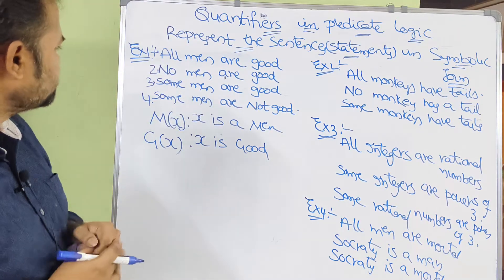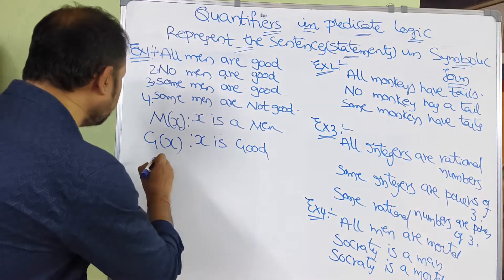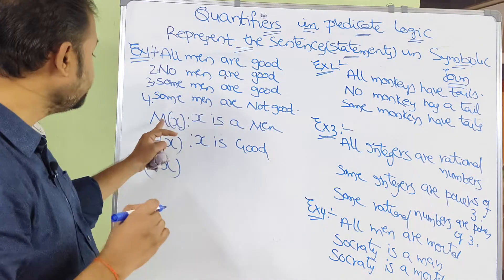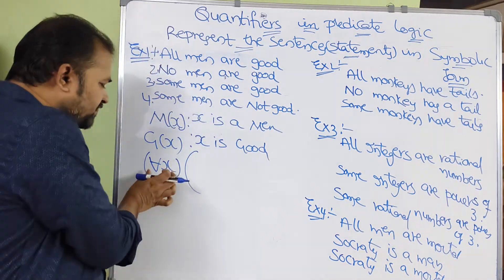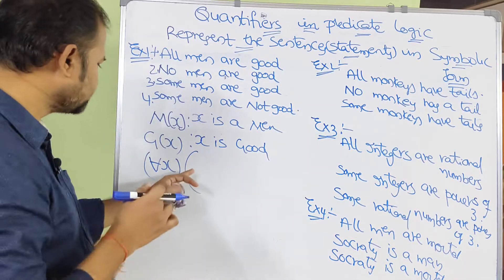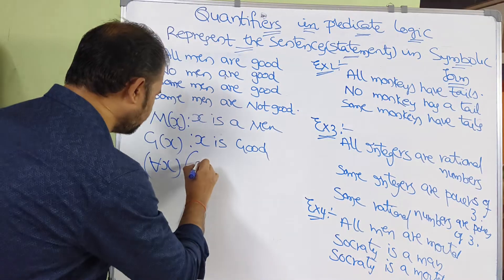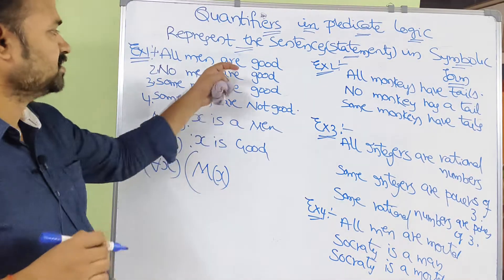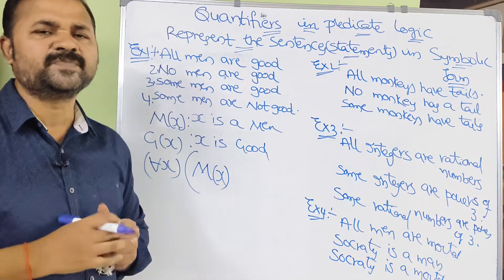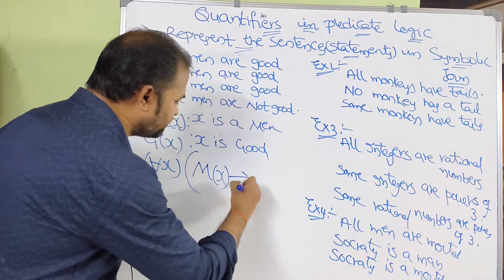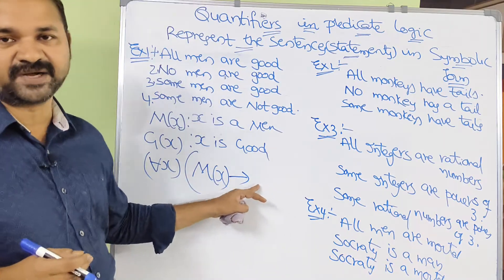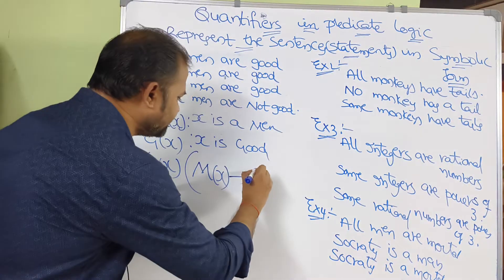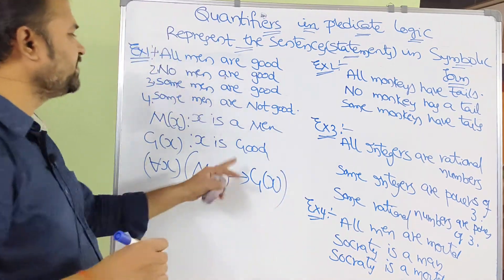Now let us represent the first sentence. 'All men are good.' Since 'all' means universal quantifier, we write: for all x, within parenthesis — men means M(x), 'are' means we use the implication symbol, and good means G(x). So the symbolic form is: ∀x(M(x) → G(x)).